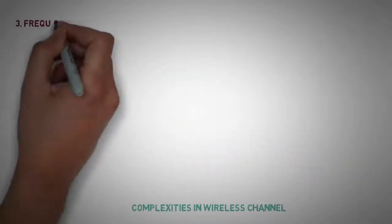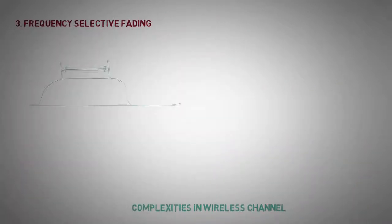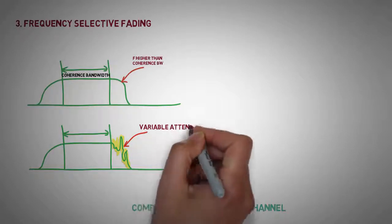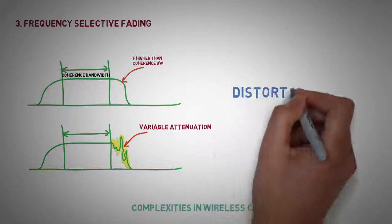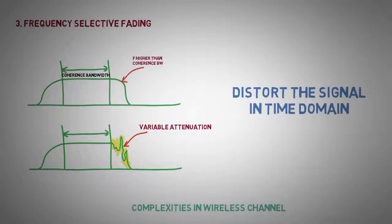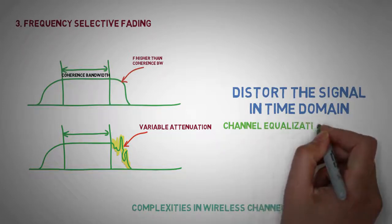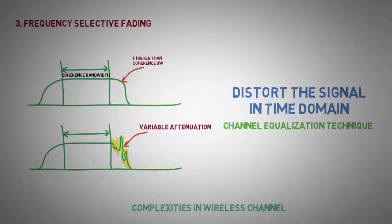Frequency selective fading. Signals having bandwidth higher than the coherence bandwidth of the channel faces variable attenuation at different frequencies. This ultimately distorts the signal and gives rise to frequency selective fading. Complex channel equalization techniques are employed to reduce it.